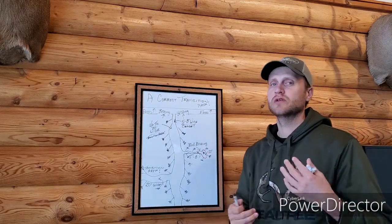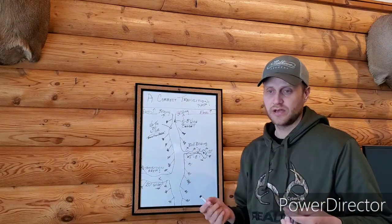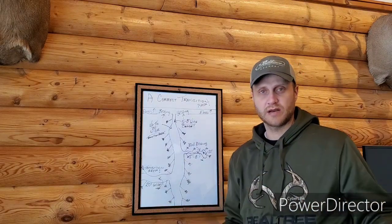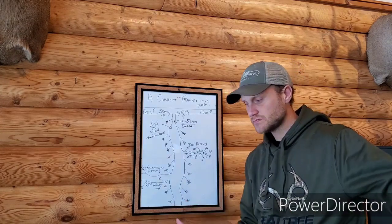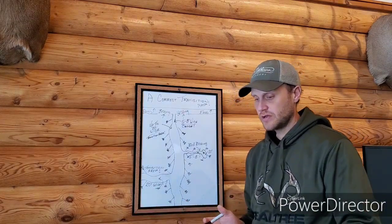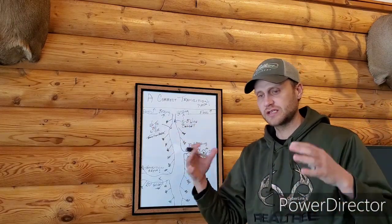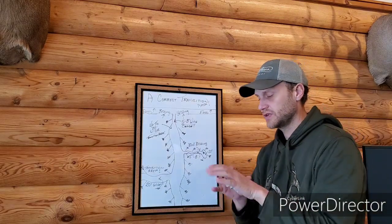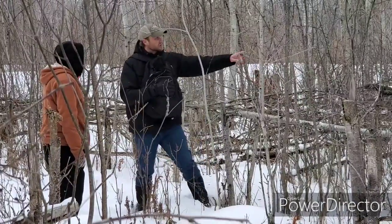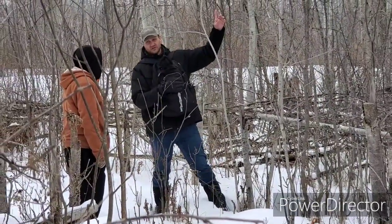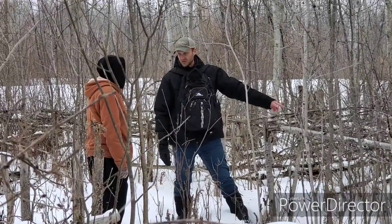In a corridor situation you're doing more hinge cutting than in a transition area, and the stumps and hinge cuts let the sunlight in anyway because of the other trees you're dropping inside the bedding area — like our hub style, for example, or a secluded buck bed. That's why we have to transfer that sunlight. Most properties I go on, when we're creating transition areas, that transition area isn't as powerful as it should be.